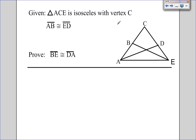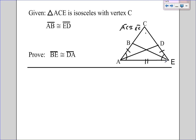Triangle ACE is isosceles with vertex C. So if C is the vertex, then AE is the base, and therefore AC is congruent to EC. Thus, angle BAE will be congruent to angle DEA because those are the angles opposite the congruent sides. AB is congruent to ED — given. And we're trying to prove that BE is congruent to DA. Isn't AE just reflexive on itself? So it looks like we have side-angle-side here.